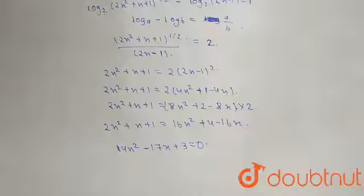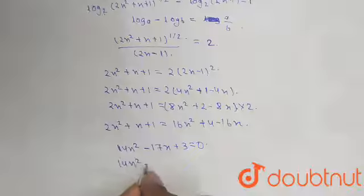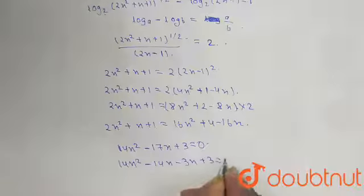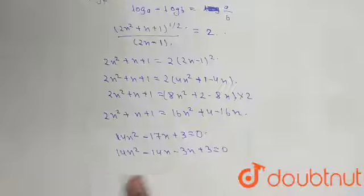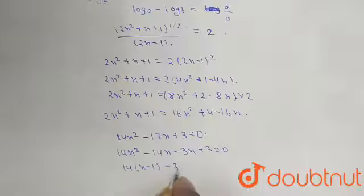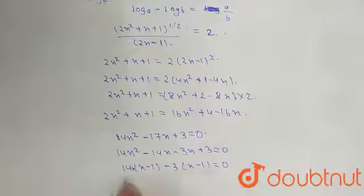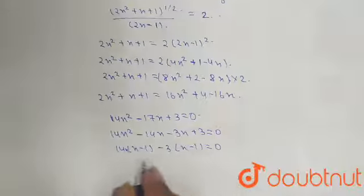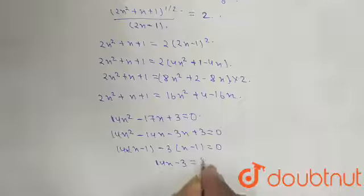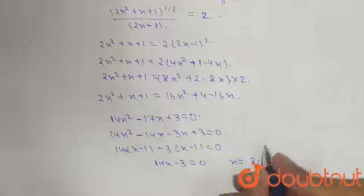We solve this quadratic equation: 14x² - 14x - 3x + 3 equals 0. Taking 14x as common from the first two terms gives 14x(x - 1) - 3(x - 1) equals 0, so x equals 3/14 or x equals 1.